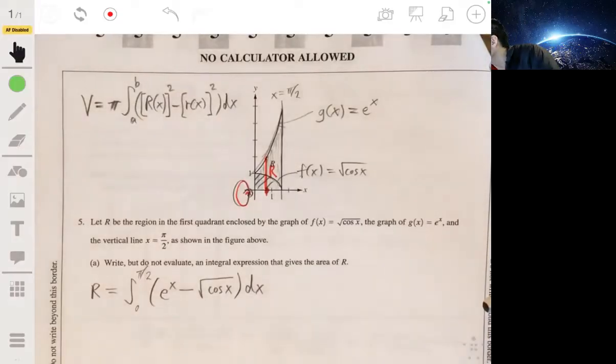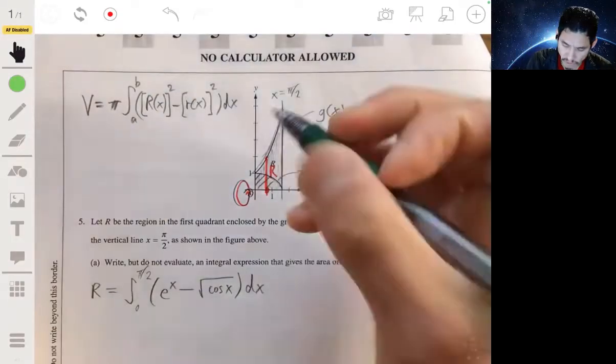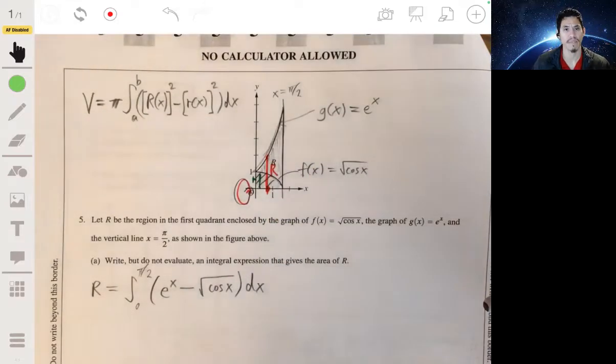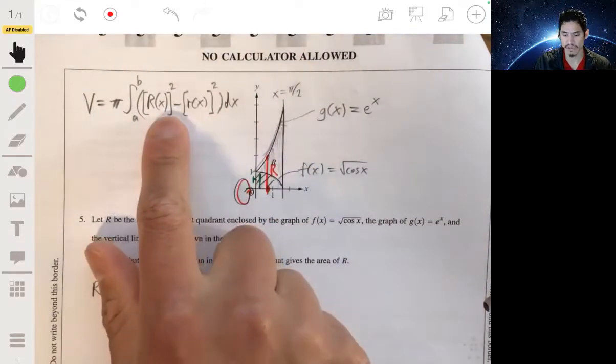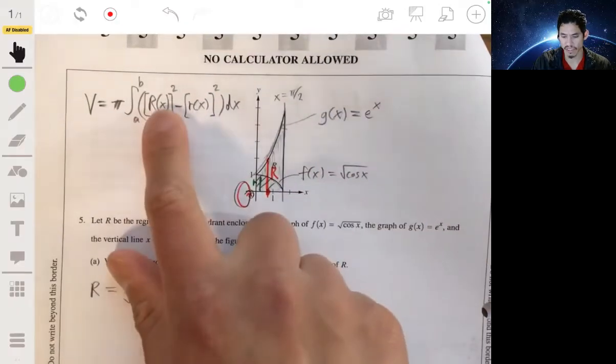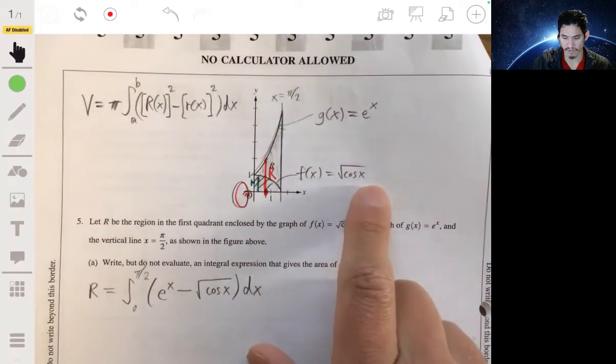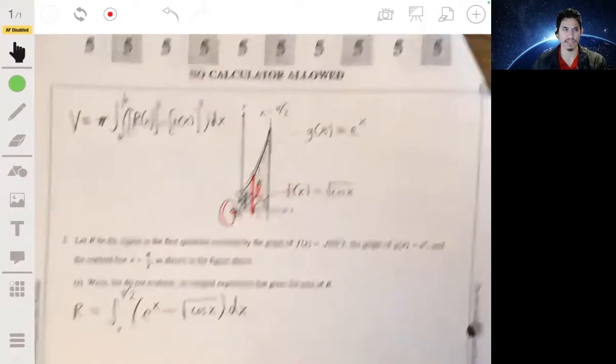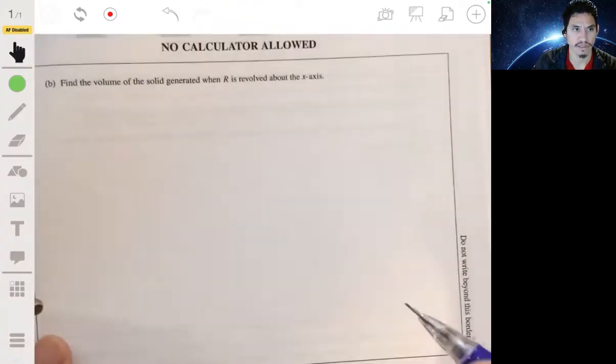The small radius—let me grab a different color pen—is this interior one right here. So we set this equal to where e^x is the large radius and the square root of cosine x is the small radius, and we just essentially have to evaluate it. The key is setting it up correctly, so let's go do that.